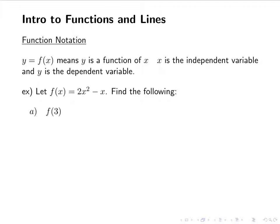a, f of 3. Everywhere I see an x, I'm going to plug in 3. I have two x's, so it's 2 times 3 squared minus 3. Remember order of operations, we do exponents first, there's nothing in parentheses we can simplify. So 3 squared is 9. 2 times 9 minus 3 gives us 15.